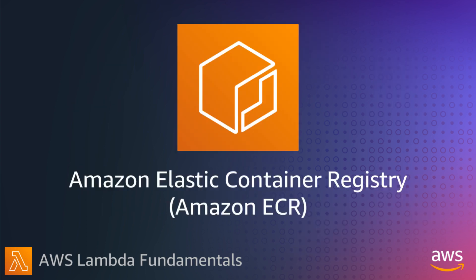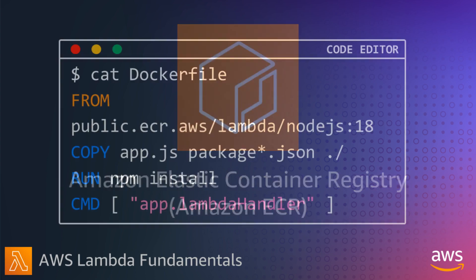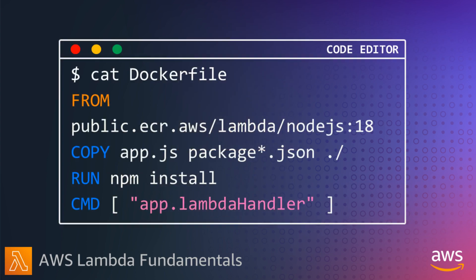You build your images and push them up to Amazon Elastic Container Registry, ECR, which is a fully managed container registry. Lambda provides a variety of curated base images for each runtime, which includes the code to make it work with Lambda. This is what a basic Dockerfile looks like: it uses an AWS-provided Node.js base image, copies your function code, installs dependencies, and sets the handler method.